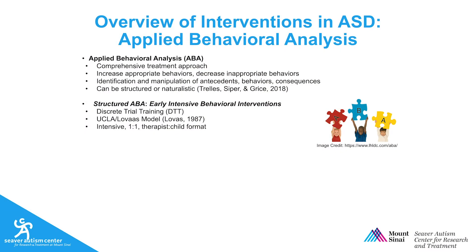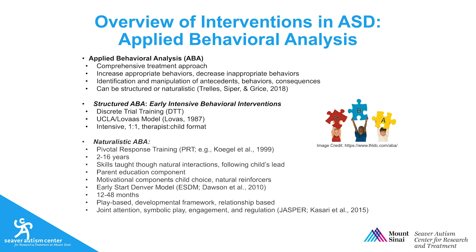Early intensive behavioral intervention is a very structured form of ABA. It takes place in a one-on-one therapist-child format and involves discrete trial training, in which a therapist uses reinforcers for each skill one by one, and then these skills are built upon.